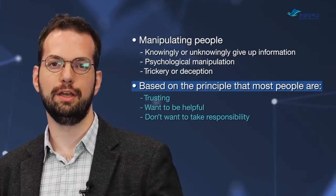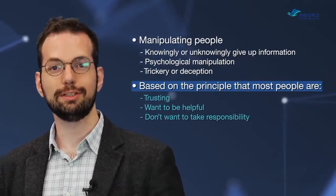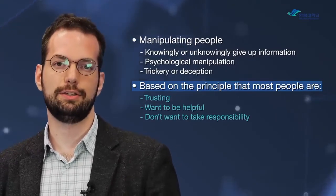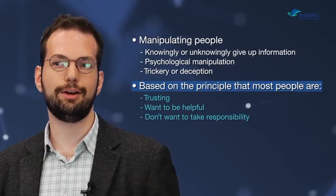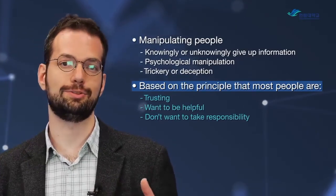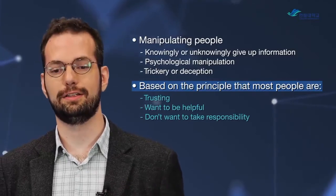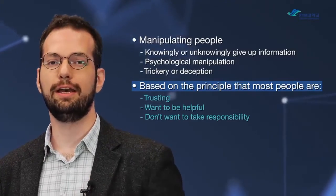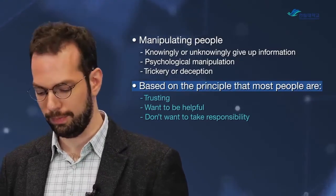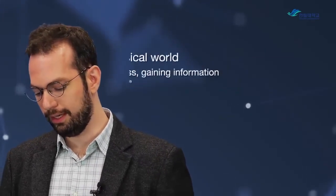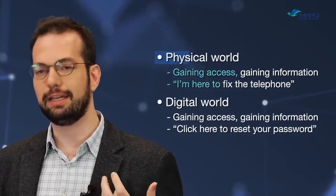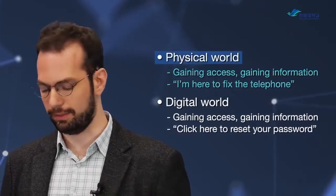The fact that humans are relatively trusting, they want to be helpful, and they don't really want confrontation — this helps social engineers to get access to information or access to physical areas, and online, access to information that they shouldn't have access to. So it's a very powerful method. In the physical world, social engineering basically helps to gain access and gain information.